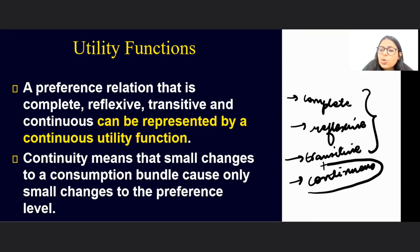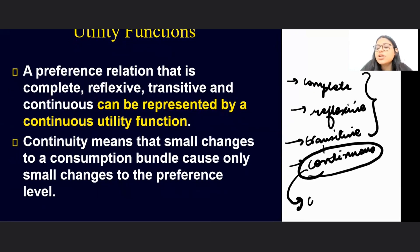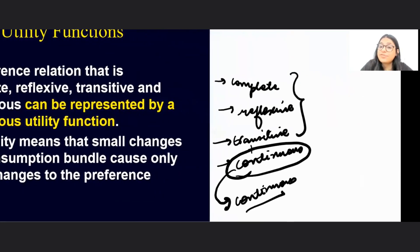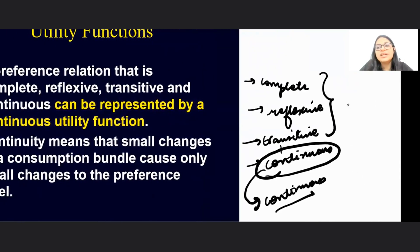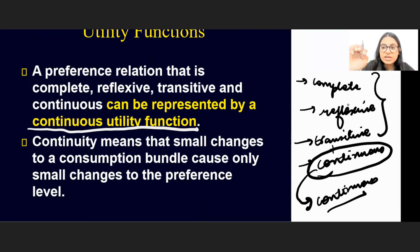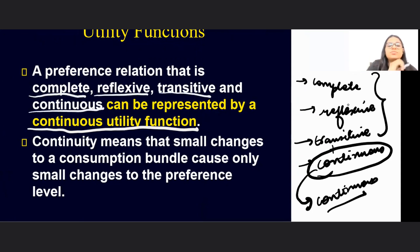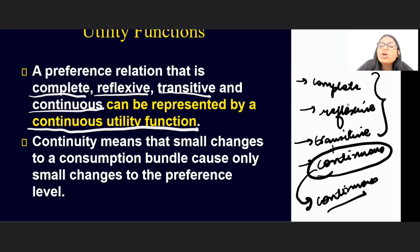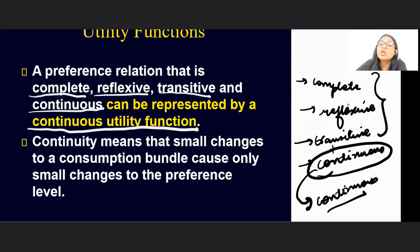Continuity is only required to ensure that the utility function you get is also continuous in nature. If my preferences are discontinuous, then I won't be able to get a continuous utility function. So in order for me to represent something by a continuous utility function, I want to make sure the four main assumptions are satisfied: completeness, reflexivity, transitivity, and continuity. Continuity means that small changes to a consumption bundle will cause only small changes to the preference level — not no change, and not a huge change.